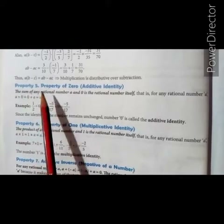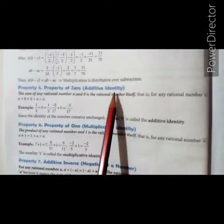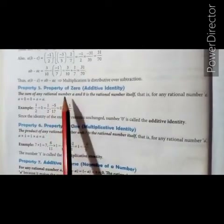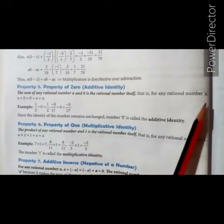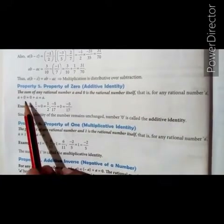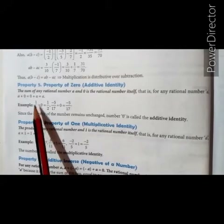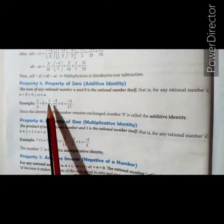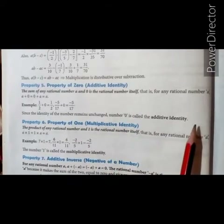Property 5: property of 0, also called additive identity. The sum of any rational number a and 0 is the rational number itself. That is, for any rational number a, a plus 0 or 0 plus a is always equal to a. For example, let a equals to 1 upon 2. So 1 upon 2 plus 0 equals to 1 upon 2. Since the identity of the number remains unchanged, the number 0 is called the additive identity.